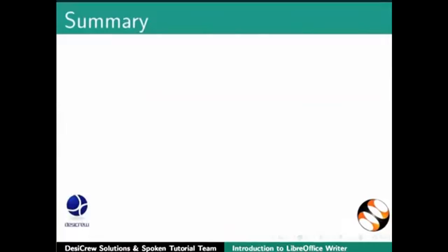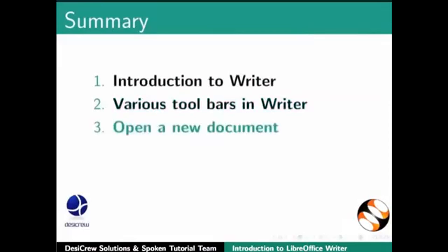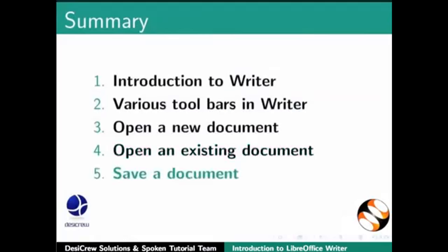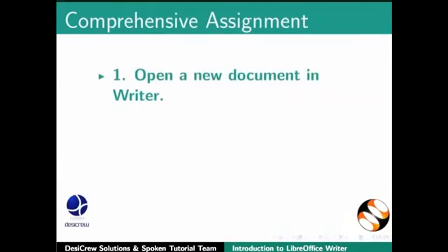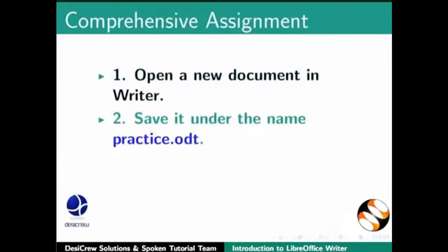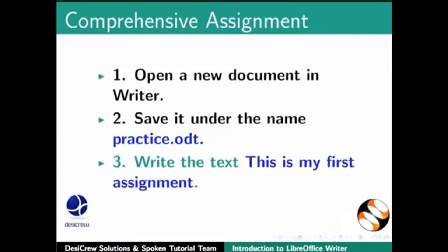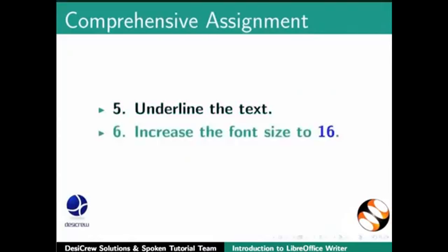To summarize, we learnt about: Introduction to Writer, various toolbars in Writer, how to open a new document and an existing document in Writer, how to save a document in Writer, and how to close a document in Writer. Comprehensive assignment: Open a new document in Writer, save it under the name practice.odt, write the text 'This is my first assignment', save the file, underline the text, increase the font size to 16, and close the file.